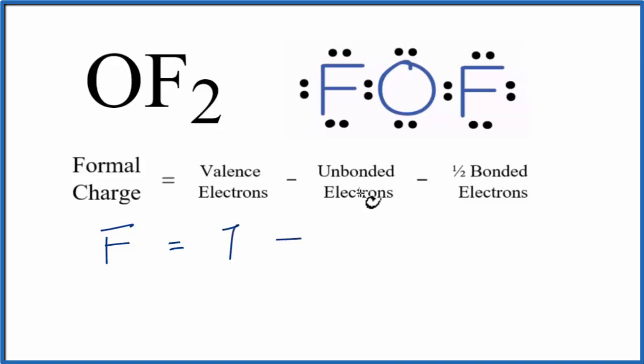We'll subtract the unbonded valence electrons. These electrons right here, they're not between atoms, they're not involved in chemical bonds. We call them unbonded electrons. So we have 2, 4, 6 unbonded valence electrons.